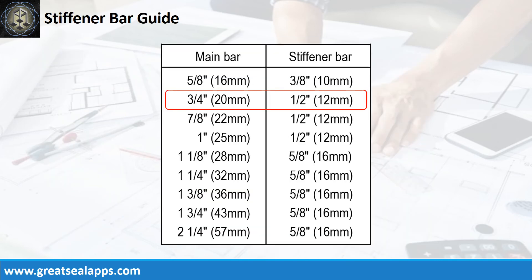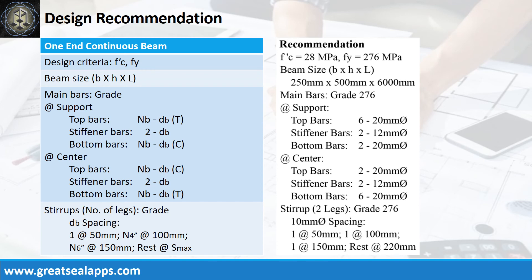For 20 mm main bars, use 12 mm stiffener bars. Design recommendations are as follows: f'c equals 28 MPa, fy equals 276 MPa. Beam size is 250 mm by 500 mm by 6000 mm. Main bars of grade 276 at support: top bars — 6 pieces, 20 mm bar; stiffener bars — 2 pieces, 12 mm bar; bottom bars — 2 pieces, 20 mm bar.